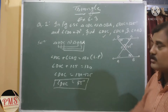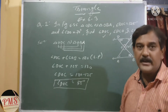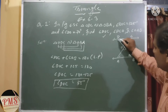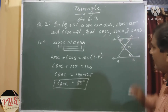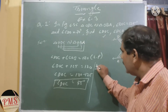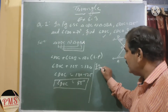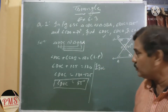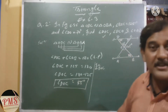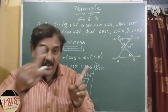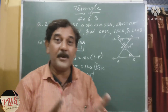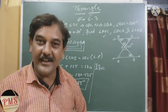Now let's find angle DCO. In triangle DOC, the measurement of angle DOC is 55 degrees and angle D is 70 degrees. Using the angle sum property of a triangle, angle ODC plus angle DCO plus angle DOC equals 180 degrees.